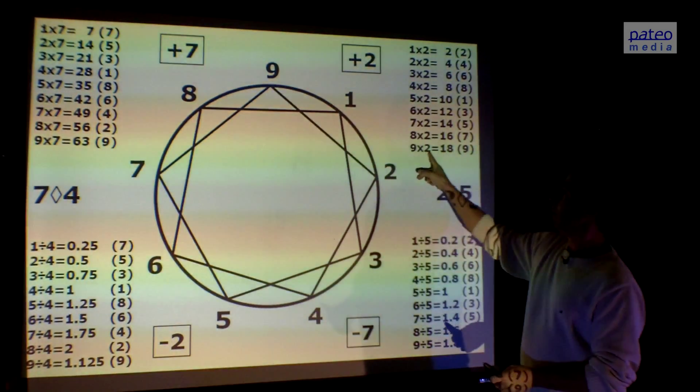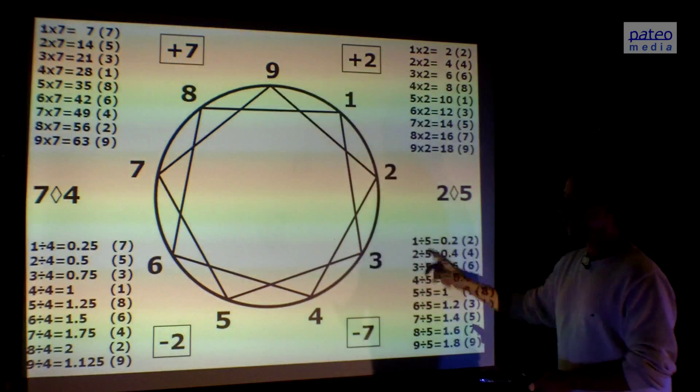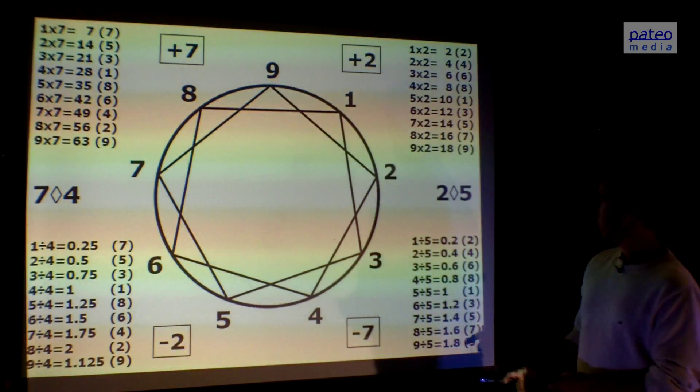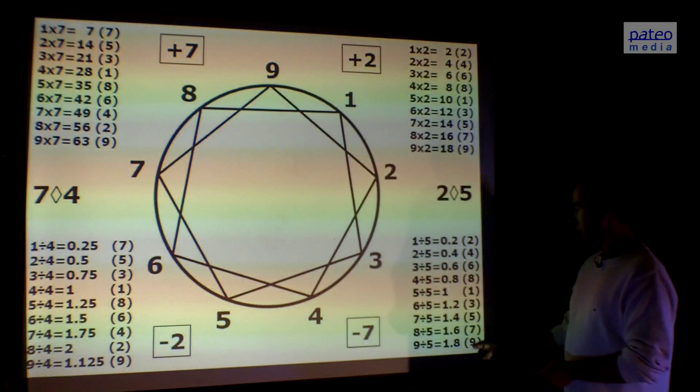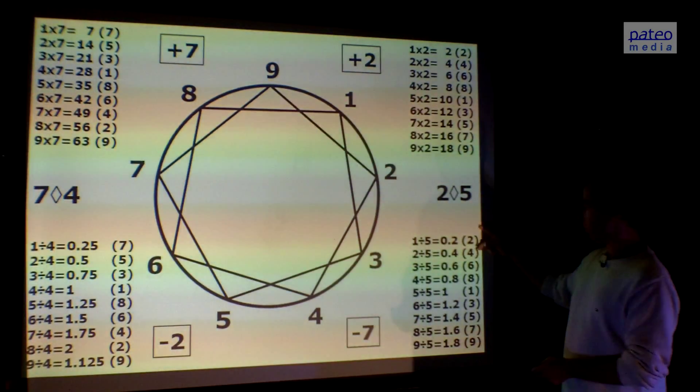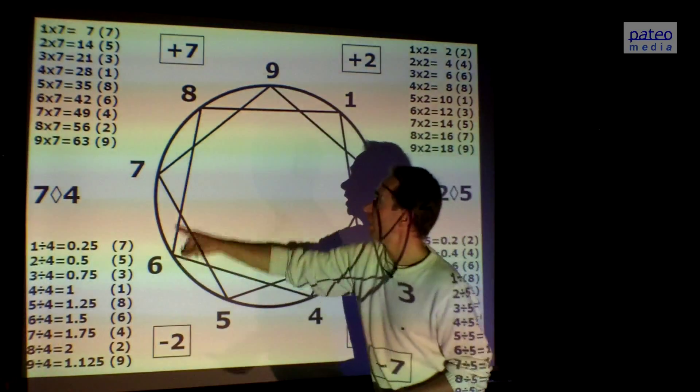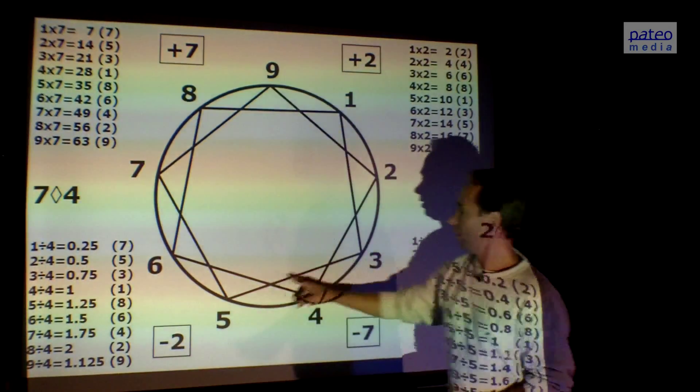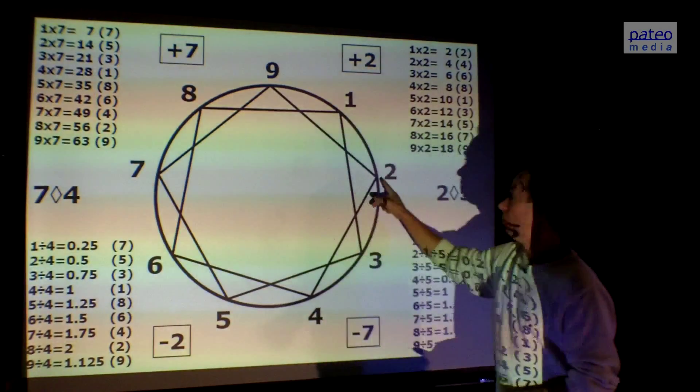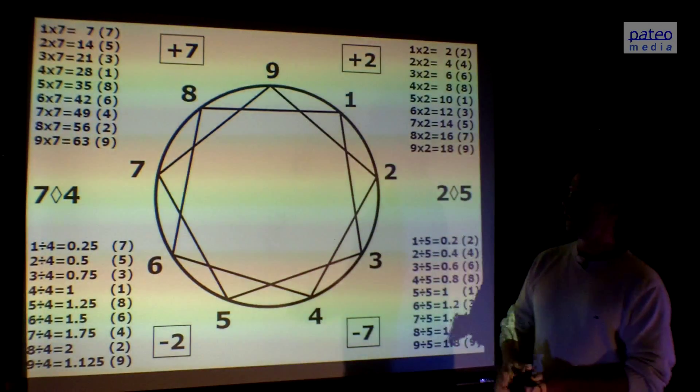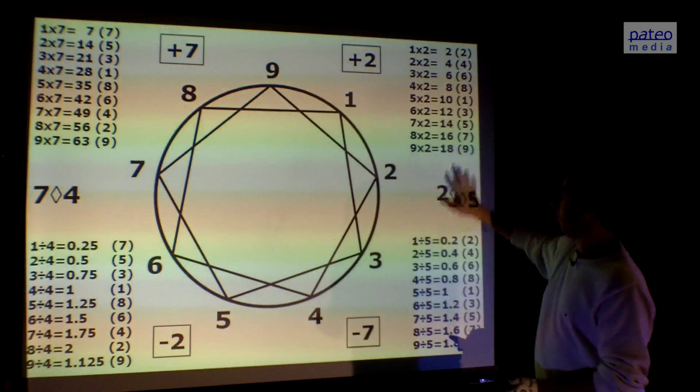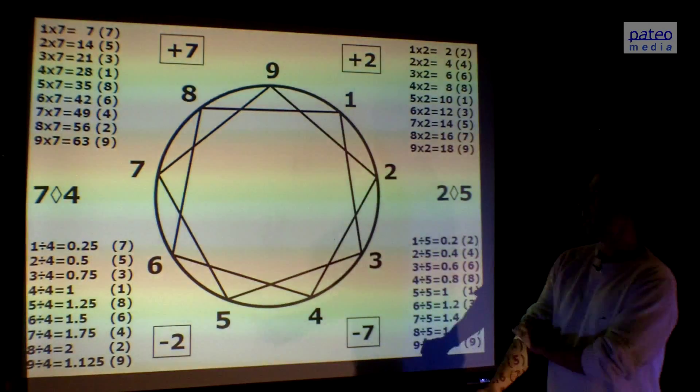We have the multiplication table of two, but we have to take the division table of five to get the same ordering. Here's the division table of five. We start with two, four, six, eight, one, three, five, seven, nine, and then go back to two. I hope this is clear. So two and five are now reciprocals. They are somehow connected.